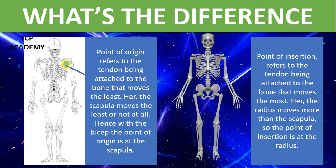Here, the scapula moves the least or not at all. Hence, with the bicep, the point of origin is at the scapula. And here we're seeing this pulsing yellow circle showing us the scapula. If you're not familiar with the scapula, it is to the back — just move your hand under the arm, touching the back, and there you'll find the scapula.